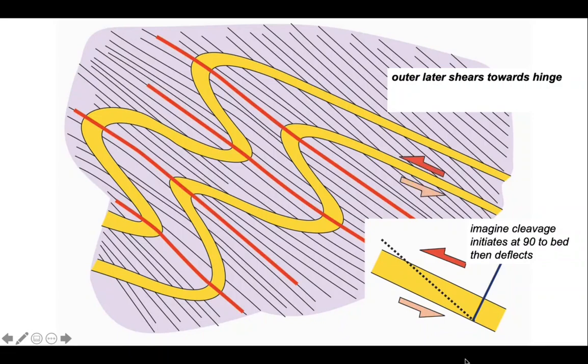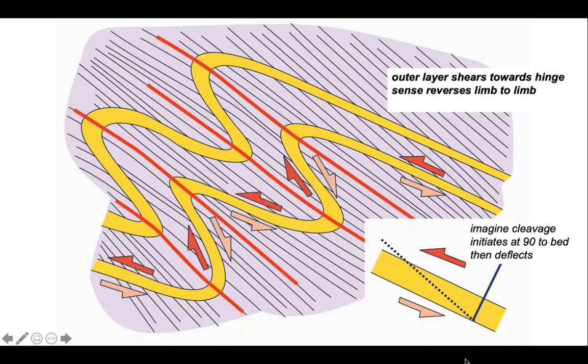Here on this limb we can see a shear sense. The outer layer shears towards the hinge and the sense reverses limb to limb. At the hinge there's no asymmetry, no shear on the hinges. This imagines that the cleavage is tracking the sense of flexural shear in folding.